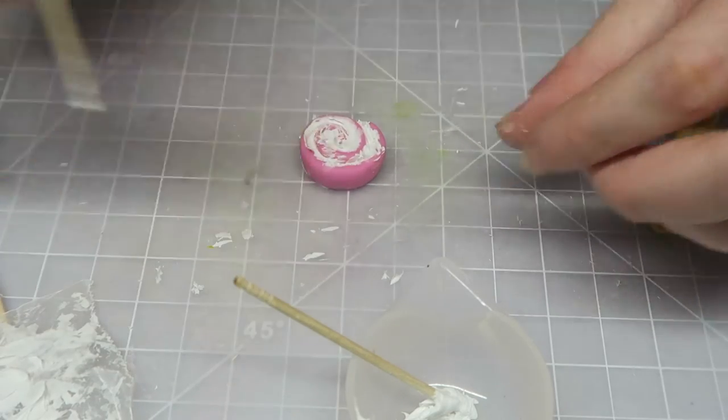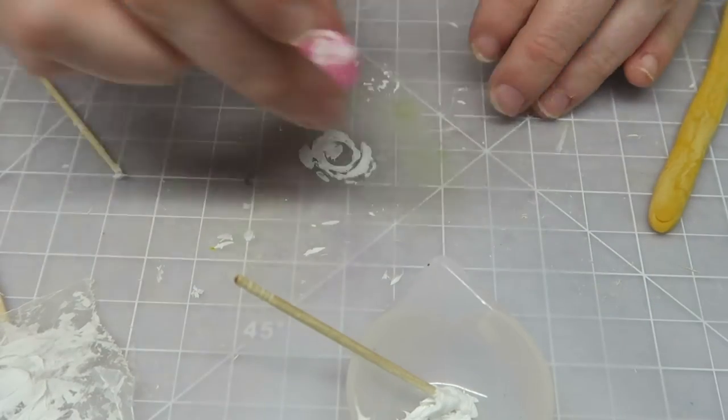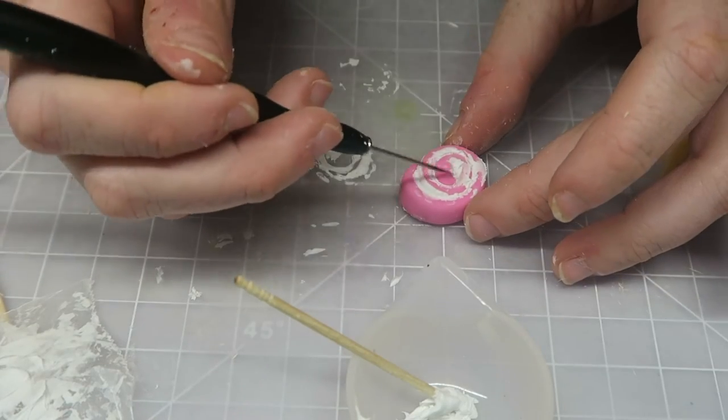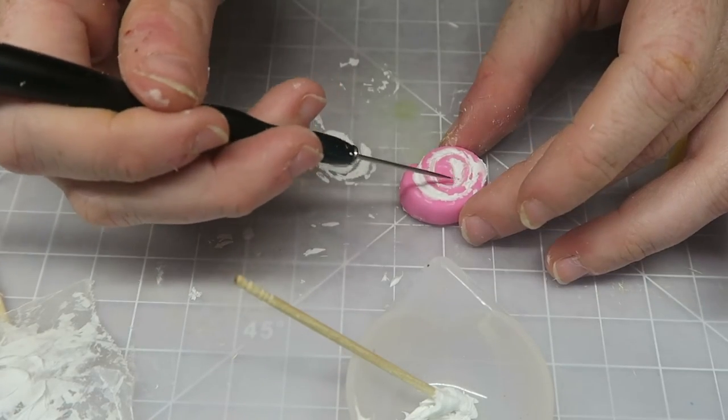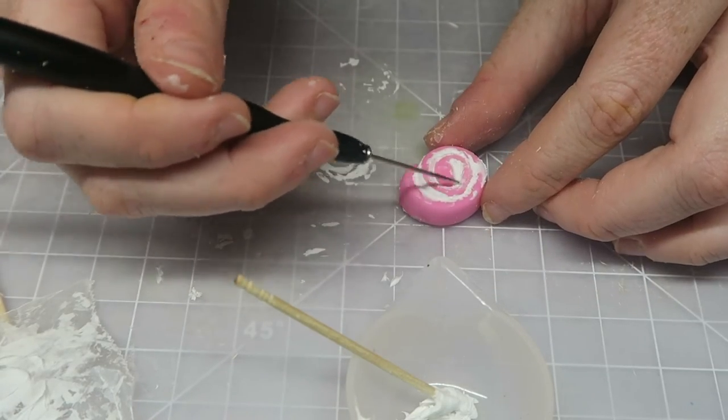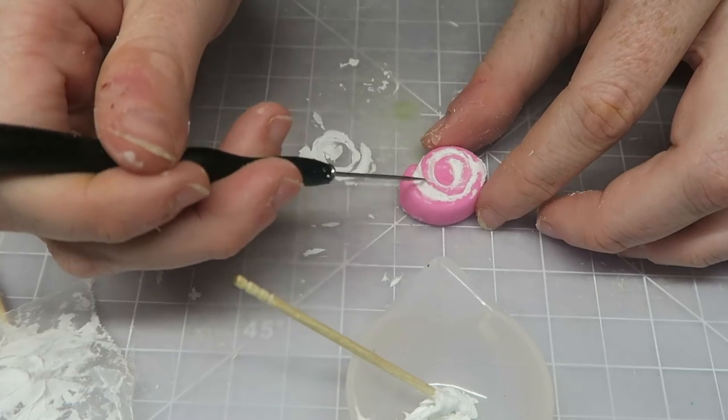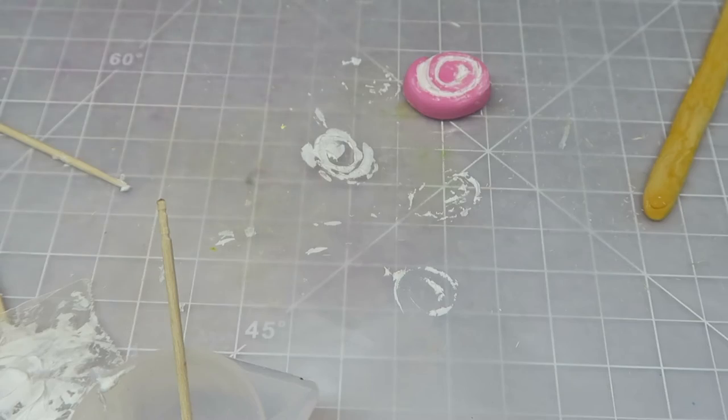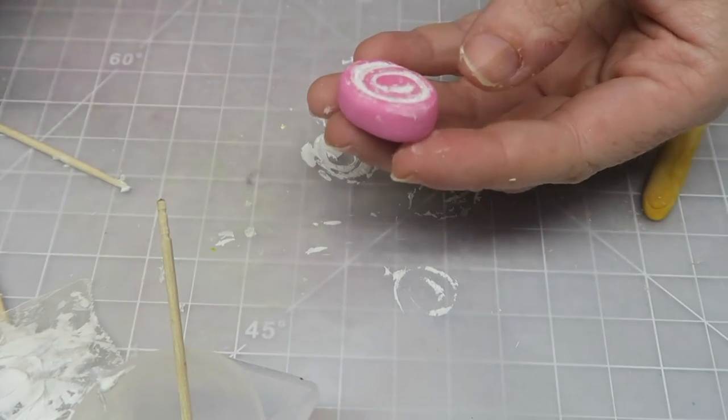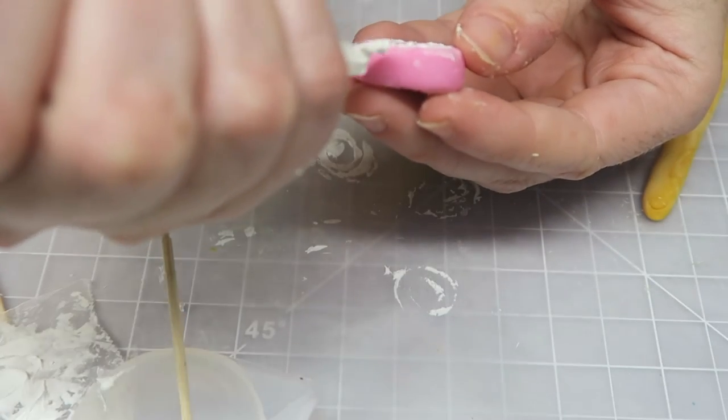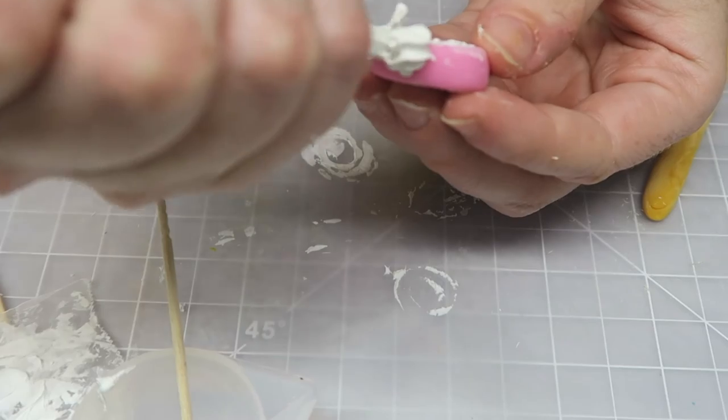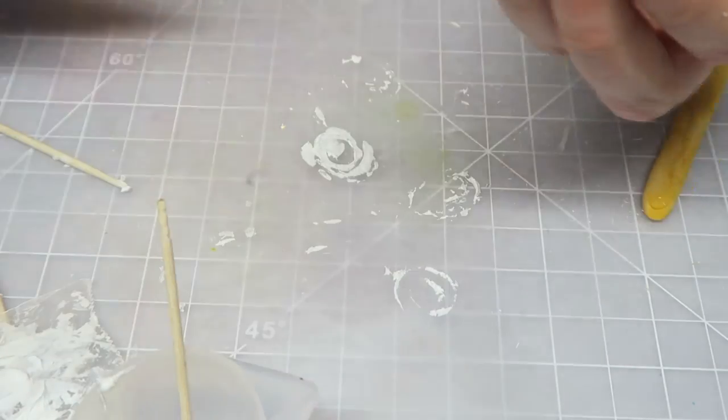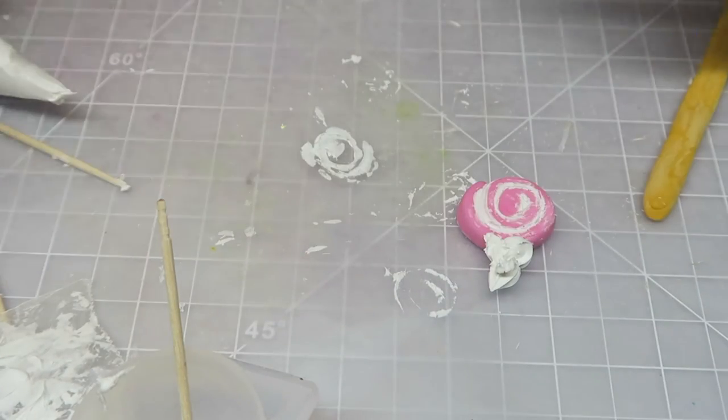Once you're done cleaning up you want to make sure that the bottom is a bit more flat than the top because we're going to be adding stuff to the top and Swiss roll cakes if you see one in real life they're a little bit more flat on the bottom. The next step that I do in the video is I'm going to put some icing on top of the cake roll but actually if I was doing it again I would do the texture first and then the icing last.